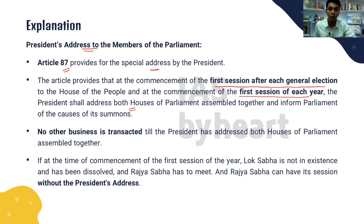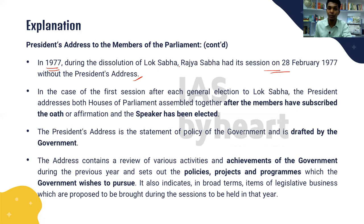The President addresses the joint sitting of both houses, and no other business is transacted until the President has addressed both houses assembled together. If the Lok Sabha is dissolved, the Rajya Sabha can have its session without the President's address — this actually happened in 1977. After each general election, the President addresses both houses after members have subscribed to the oath and after the Speaker has been elected.